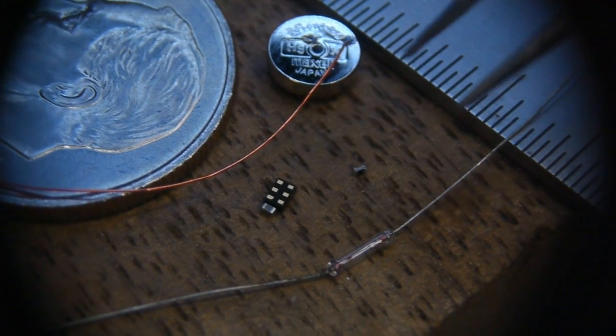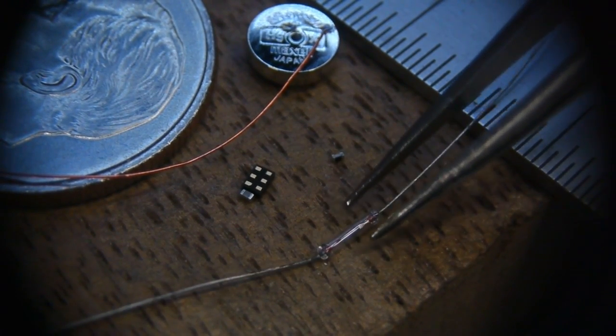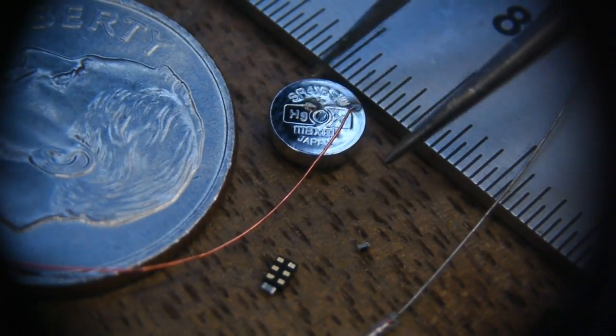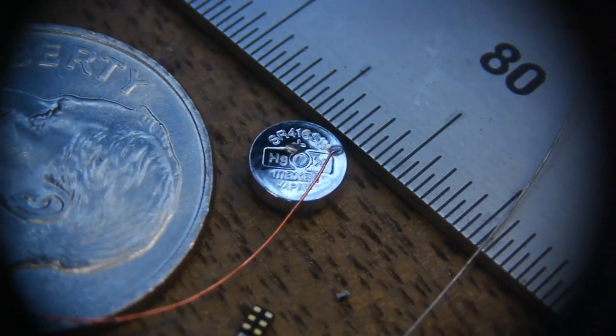Then we have the bulb itself, this is the 0.75 millimeter tube shaped light bulb, tungsten filament bulb, and the SR416 battery. I'll put links to all this stuff in the description by the way.